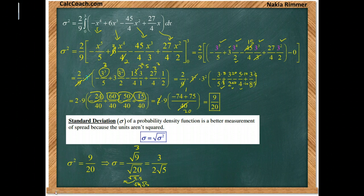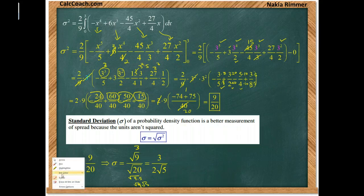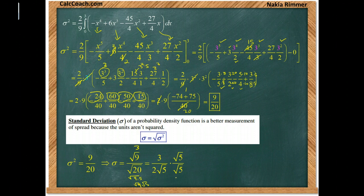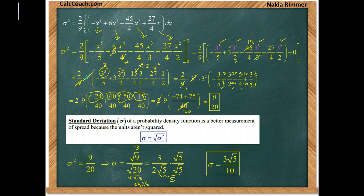Alright, great. So you could leave it like that. Technically there is a root in the denominator of something that's not a perfect square. Technically you can't leave it like that. We can rationalize it if we needed to by multiplying both the numerator and the denominator by root 5. Giving us a final answer, root 5 times root 5 is a 5, of standard deviation being 3 root 5 all over 10.